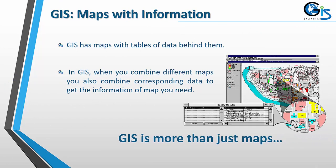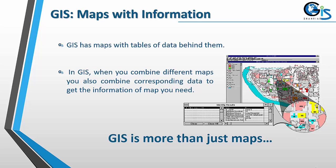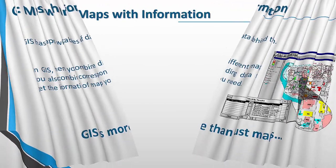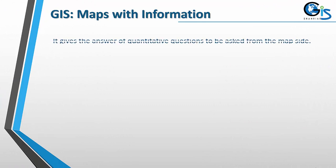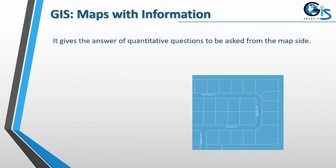GIS maps come with information. GIS has maps with tables of data behind them. In GIS, when you combine different maps you also combine the corresponding data to get the information of the map you need. So GIS is more than just maps — it gives answers to quantitative questions asked from the map.